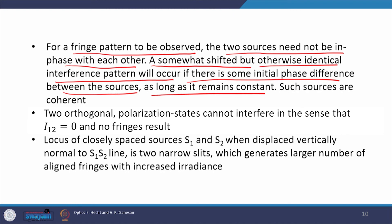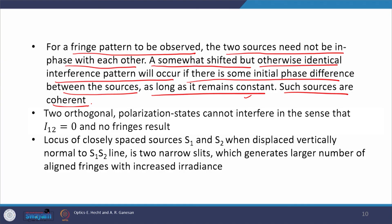If the fringe pattern is vertical straight lines, a constant non-zero initial phase shift is indistinguishable from zero shift. As long as this initial phase difference is constant, a nice bright and beautiful interference pattern is visible, and interferometer applications remain valid. If two sources maintain a constant phase difference over a long time, they are called coherent sources. We will discuss coherence further in forthcoming lectures.